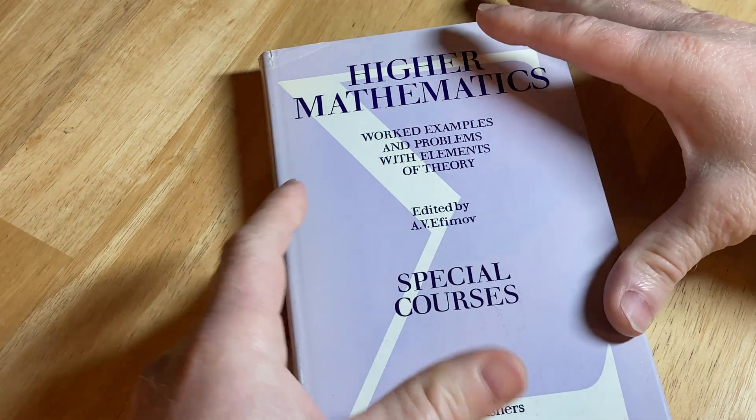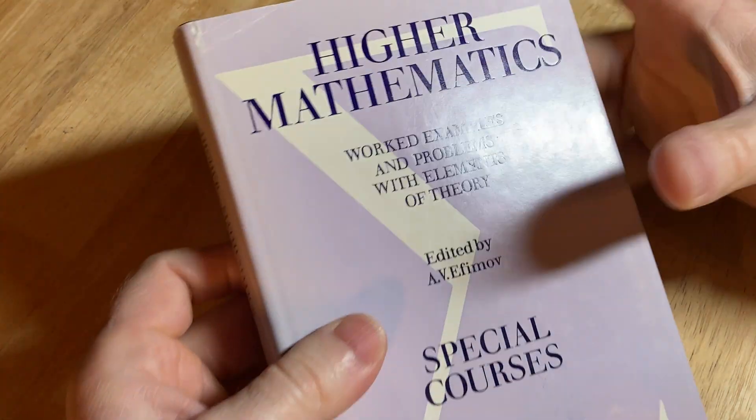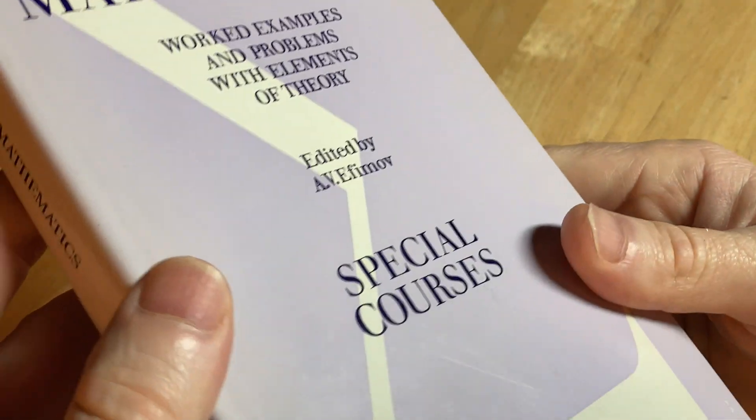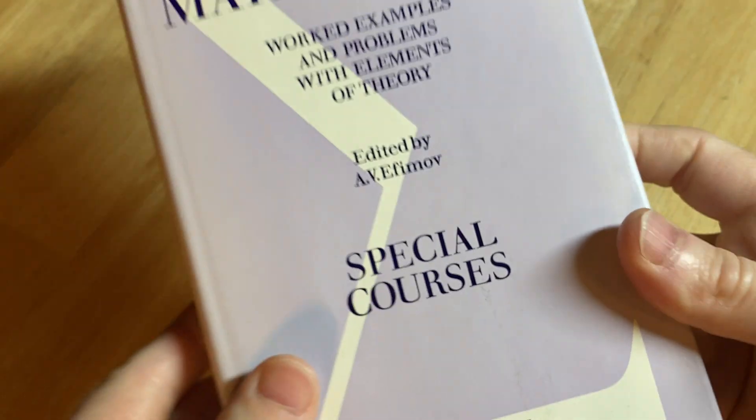Hi, let's just take a quick look here at a book I have. It's called Higher Mathematics, Worked Examples and Problems with Elements of Theory. Special Courses. This is a rare book. We're just going to take a brief look at it. It's by Mir Publishers Moscow.